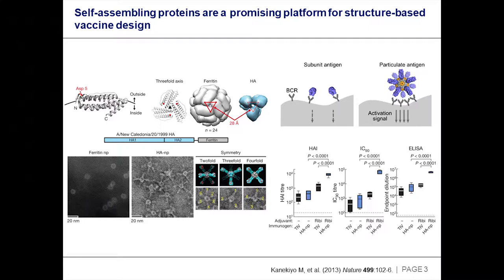It's been known for a long time that if you take just an antigenic fragment of a protein, often that's insufficiently immunogenic to form an effective vaccine on its own. If you take that same antigenic fragment and present it in a repetitive array, you get a much more robust immune response. This is thought to be primarily driven through the clustering of B-cell receptors on the B-cell surface, although trafficking of that particular antigen is probably also playing a role.